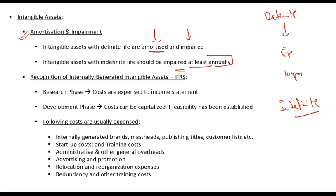Under IFRS you are required to test for impairment at least annually. So again: intangible asset with definite life — you can either amortize or impair it like any normal asset. Intangible asset with indefinite life — you can only impair it, and you are required to test for impairment at least annually. To test for impairment, you find out the value in use, compare it with your carrying amount, and then decide whether to impair or not.